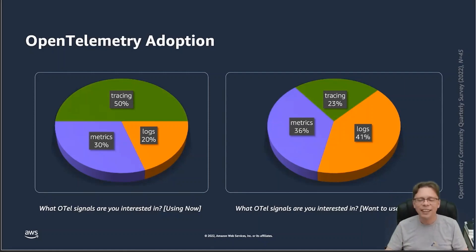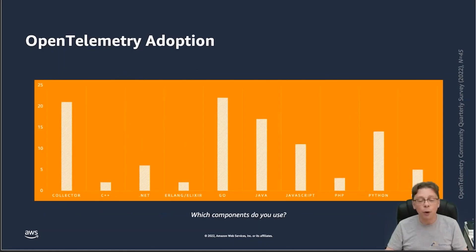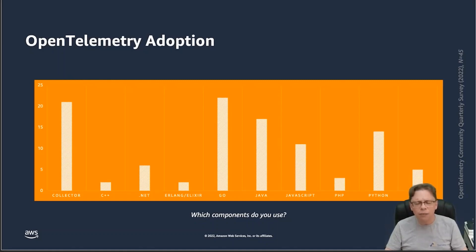Looking into the future, the picture slightly changes — logs and metrics are expected to take a bigger share, as you would expect. Asking about what components are being used — both the collector and across programming languages — the collector and Go, Java, Python, and JavaScript are leading the pack. Go doesn't surprise me too much because the whole cloud-native ecosystem, from Kubernetes to Prometheus to the OpenTelemetry Collector, is written in Go, so there is a certain affinity for early adopters.